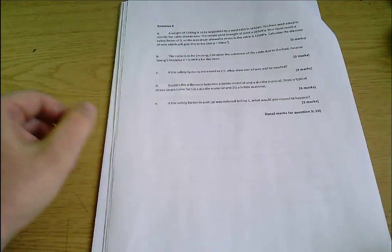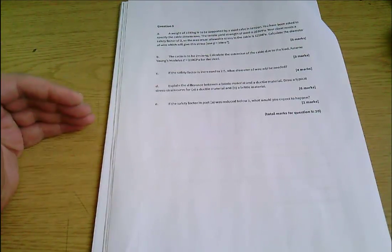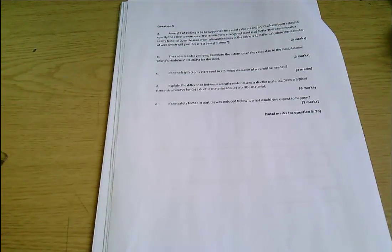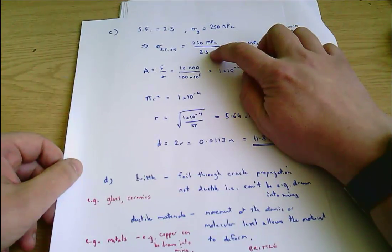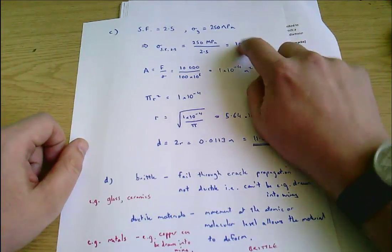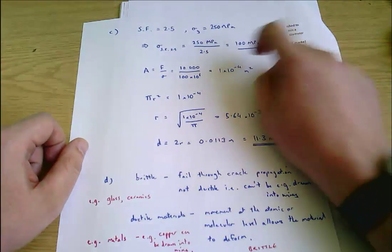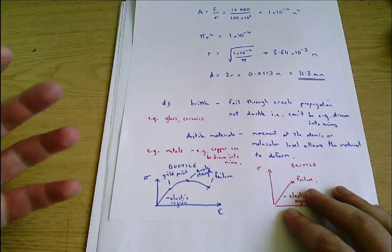Part E then finally - part E says if the safety factor in part A is reduced below one what would you expect to happen? It's not even really worth writing this down. If the safety factor is reduced below one, then that means we are using a stress in the cable which is higher than the tensile yield strength. If you remember here we divided the tensile yield strength by the safety factor to get our working stress, the stress we're going to operate at. If the safety factor is less than one this will be higher than the tensile yield stress. And so if the stress is higher than this point on the graph, the tensile strength, the material is necessarily going to break. We're beyond the maximum strength that can be sustained by that material. So the answer to part E is if the safety factor is reduced below one, you expect the material to break.